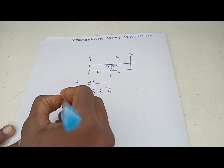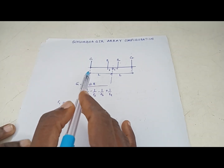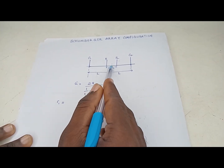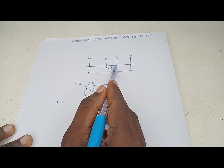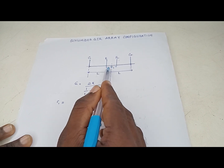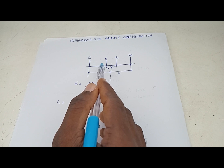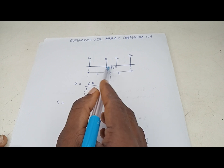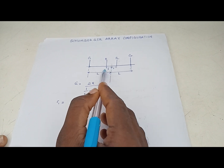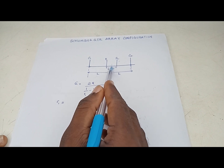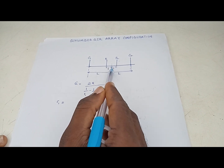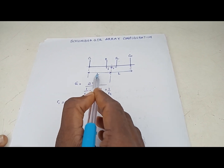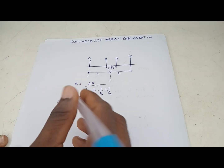For the Schlumberger array, we measure from the midpoint between P1 and P2. Unlike the Wenner array which has equal spacing between all electrodes, the Schlumberger array is different. The distance from the midpoint to either potential electrode is small letter l, and the distance from the midpoint to either current electrode is capital letter L.